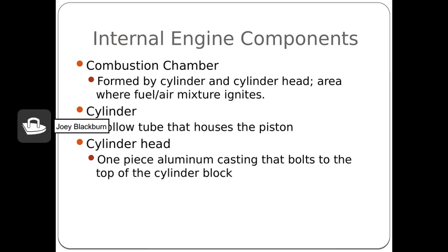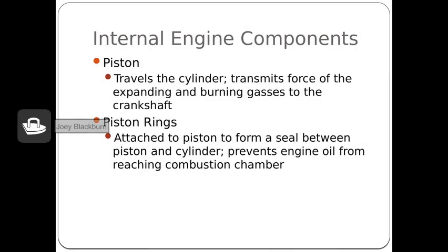To add a little clarity: the combustion chamber is the area formed by the cylinder where the air-fuel mix ignites. The cylinder is a hollow tube that houses the piston. The cylinder head is the one-piece block that actually bolts to the top of the cylinder. The piston travels in the cylinder bore, transmitting the force of the explosion in the combustion chamber to the crankshaft to power whatever we're working with — maybe a lawn mower, generator, or whatever. The piston rings are attached to the piston to form a seal to keep engine oil out of the combustion chamber.